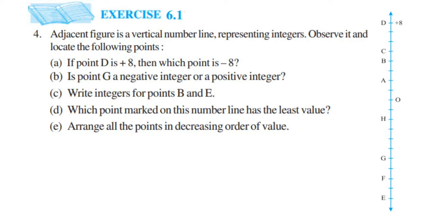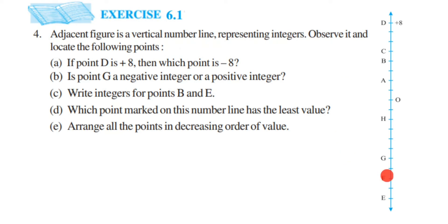Here I am doing Exercise 6.1, fourth question from the Class 6 integer chapter. The question here is: the adjacent figure is a vertical number line representing integers — observe it and locate the following points. We have been given a few questions to solve, and the number line is given to us on the right-hand side.